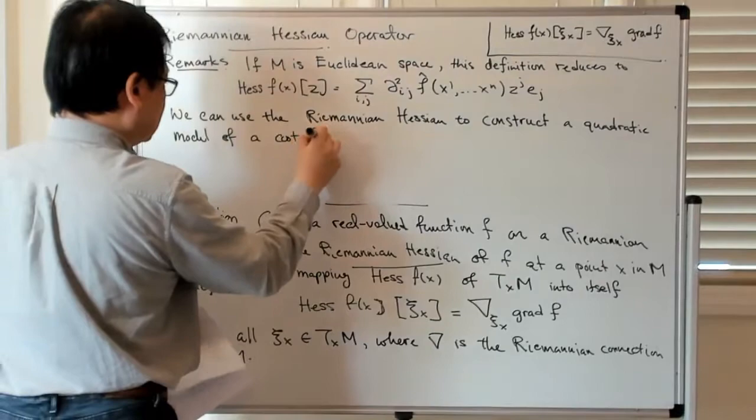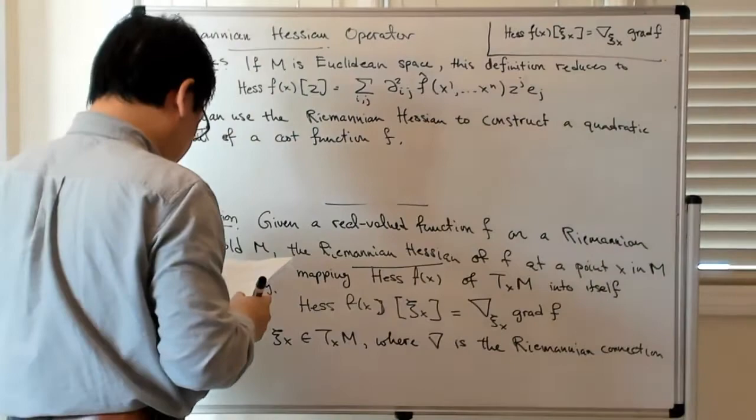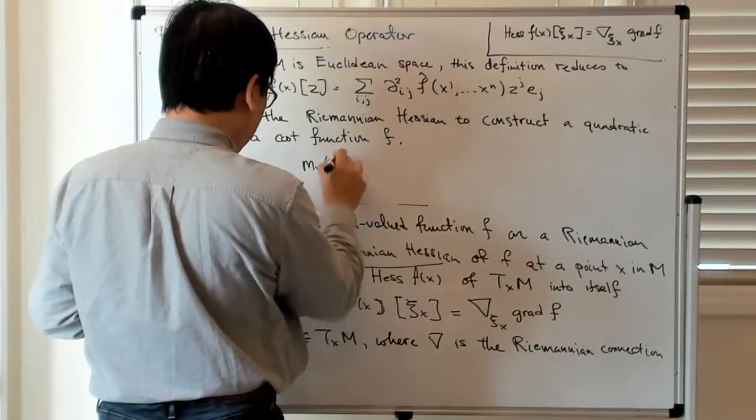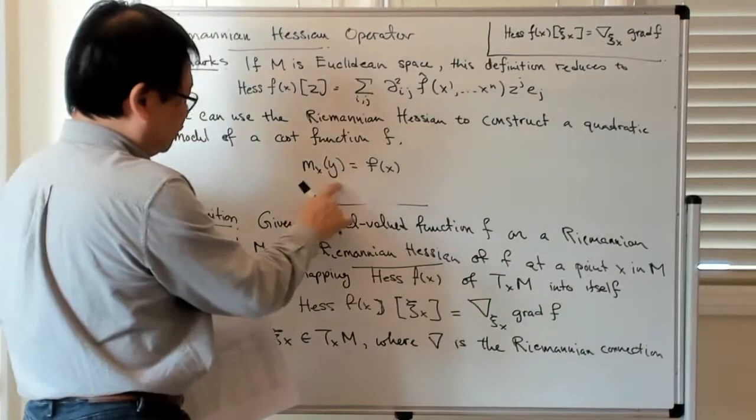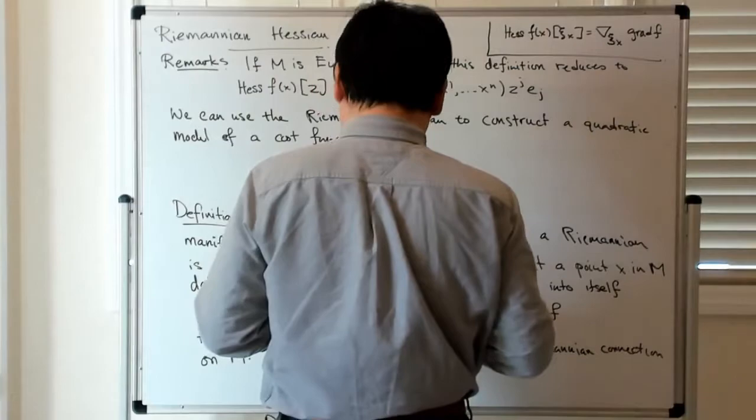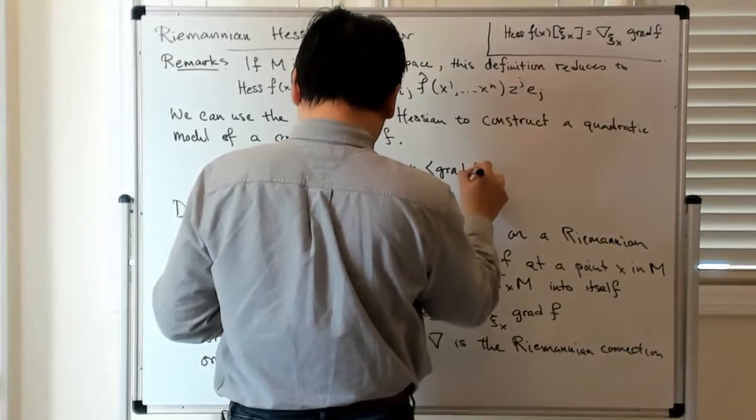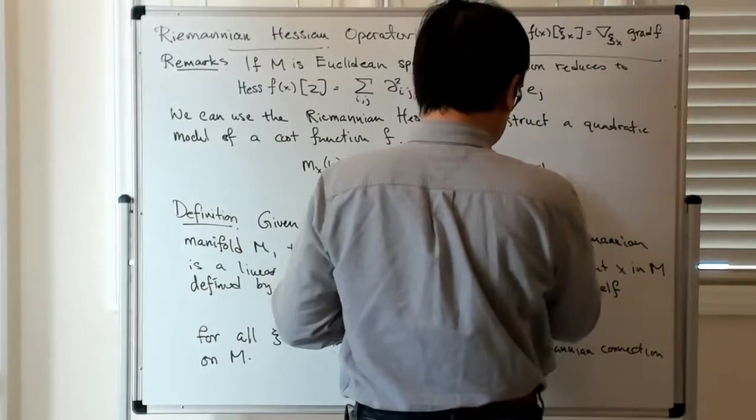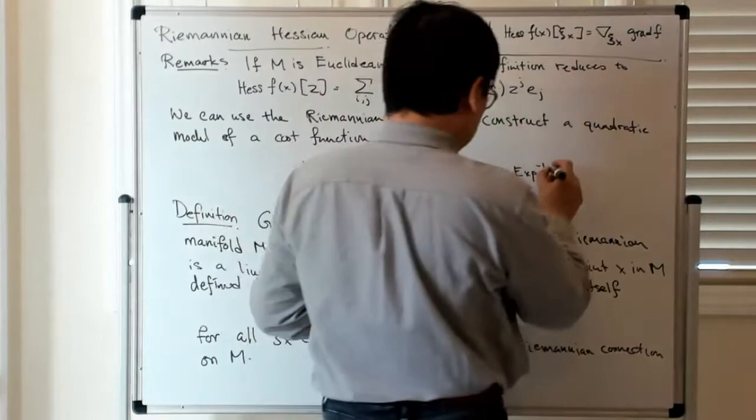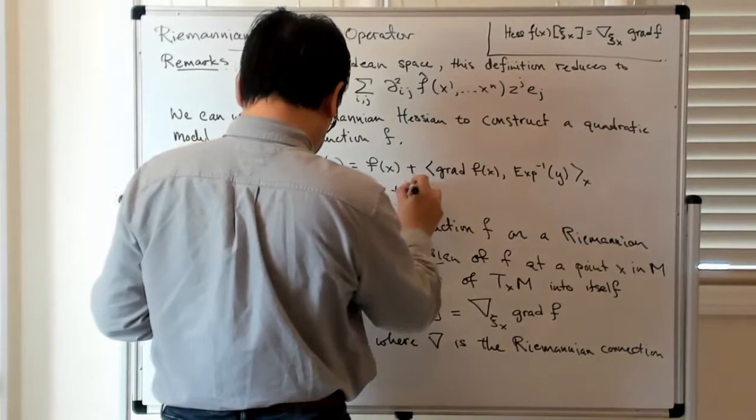of a cost function, so let's think of the cost function f. So let's think of the model as m sub x at some point y, so this is just f at x. So x is a base point and y is a nearby point I guess is perhaps the best way to think about this. So it's f of x plus the inner product between the gradient of f at x with the inverse exponential, so this is the Riemannian inverse of the Riemannian exponential, it's the Riemannian logarithm if you will.